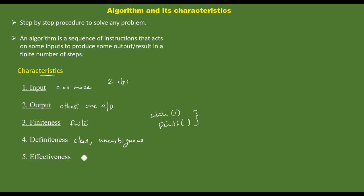Next characteristic: effectiveness. Unnecessary statements are not needed. If we have one algorithm with a particular objective, that objective must meet the goal — unnecessary statements should be avoided. This covers the main characteristics of an algorithm. Thank you.